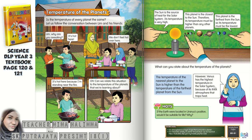But look at what this girl is saying: however, Venus has the highest temperature in the solar system. Remember Venus? It's the second planet from the sun. Compared to Mercury, Venus's temperature is higher because of its thick atmosphere that traps heat. Although Mercury is the nearest planet to the sun, it is not the hottest planet — Venus is. You need to remember why: because of the thick atmosphere around Venus.